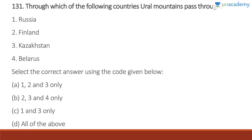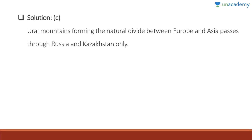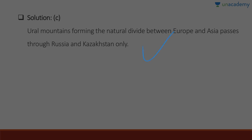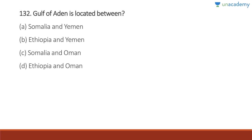Question 131: Through which countries do the Ural Mountains pass? Russia — yes; Kazakhstan — yes; but Finland and Belarus — no. Answer is C, one and three. The Ural Mountains form the natural divide between Europe and Asia and pass through Russia and Kazakhstan only.